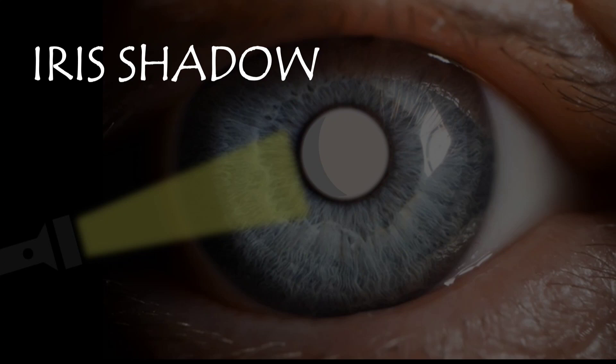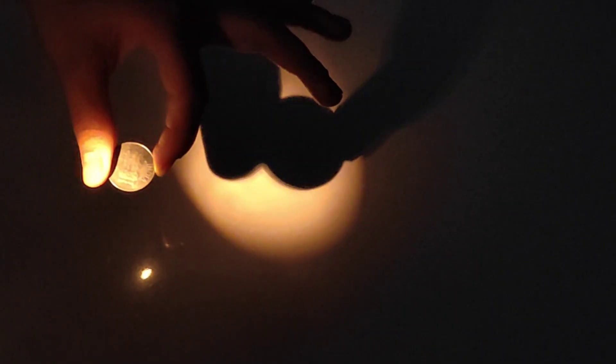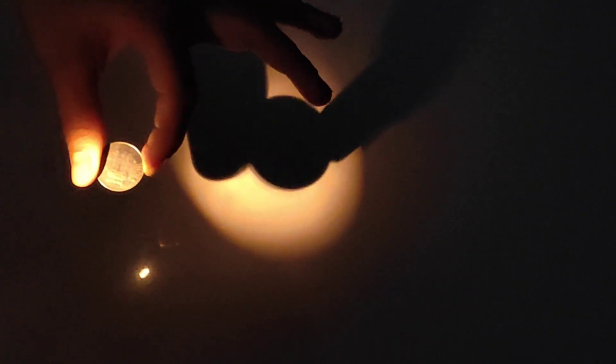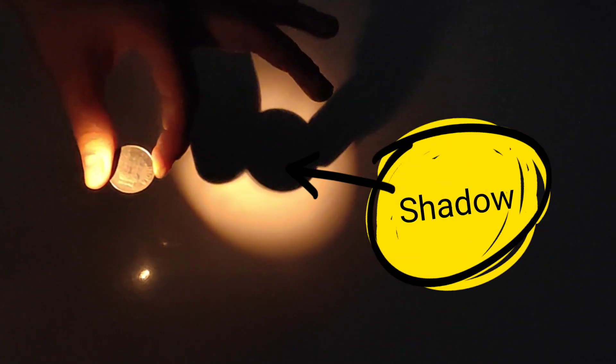Before getting into iris shadow, let's understand what is actually a shadow and how does it form. Shadow is something which falls on an opaque surface when there is a clear space between the object and a surface in the presence of light. Here I took a coin as an object which is opaque in nature, and when I throw a light on this object, you can notice a shadow of the coin behind its body.